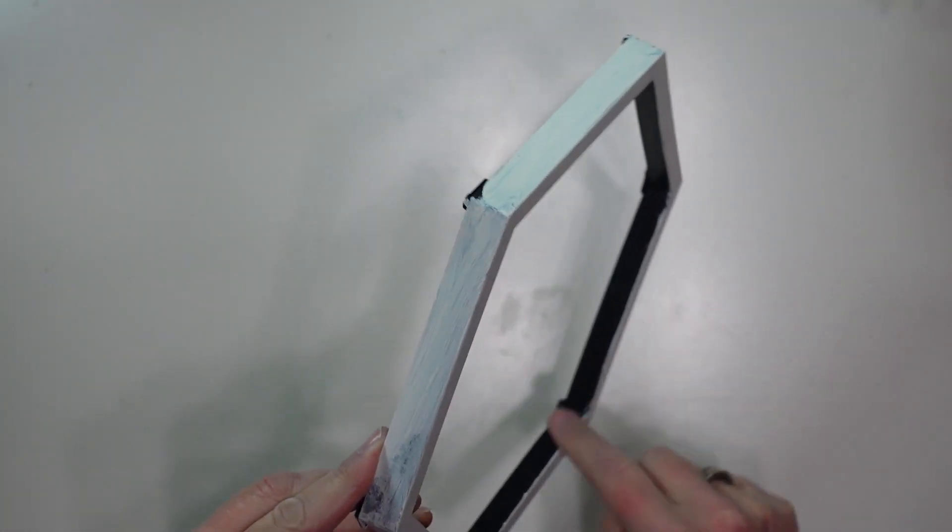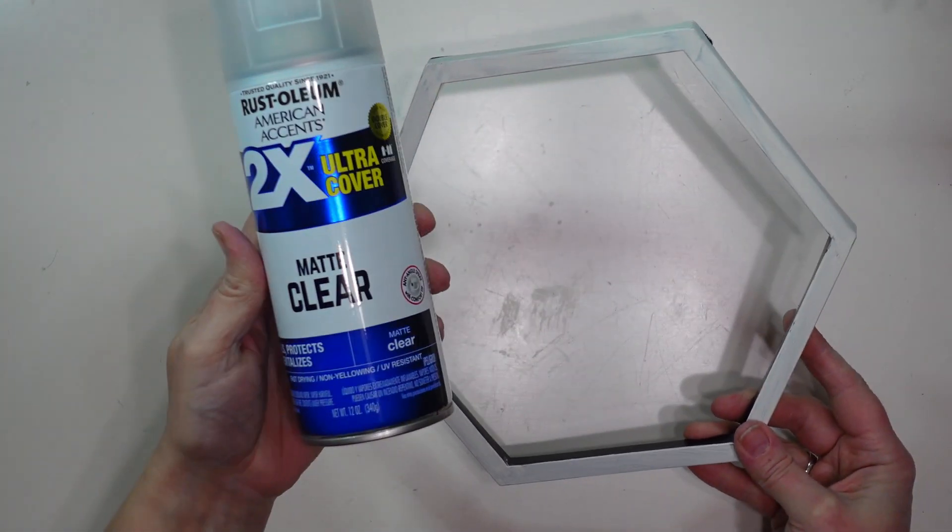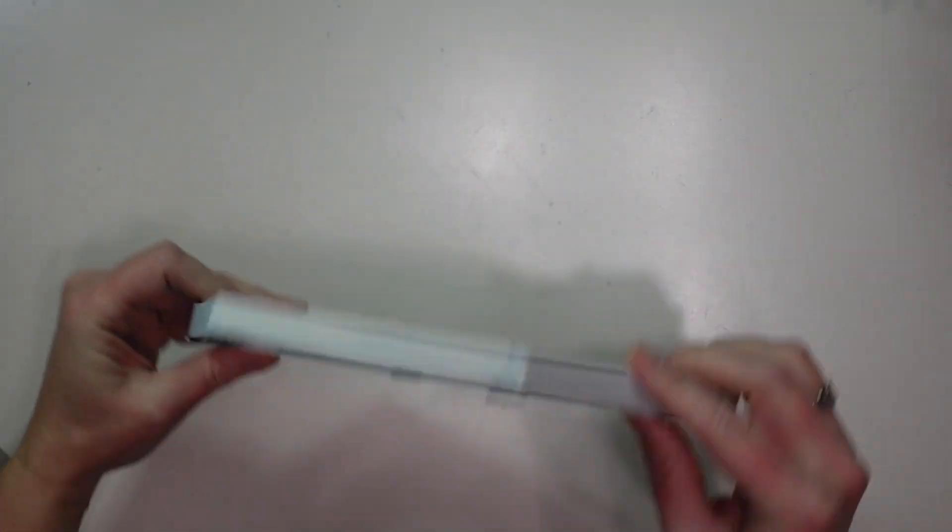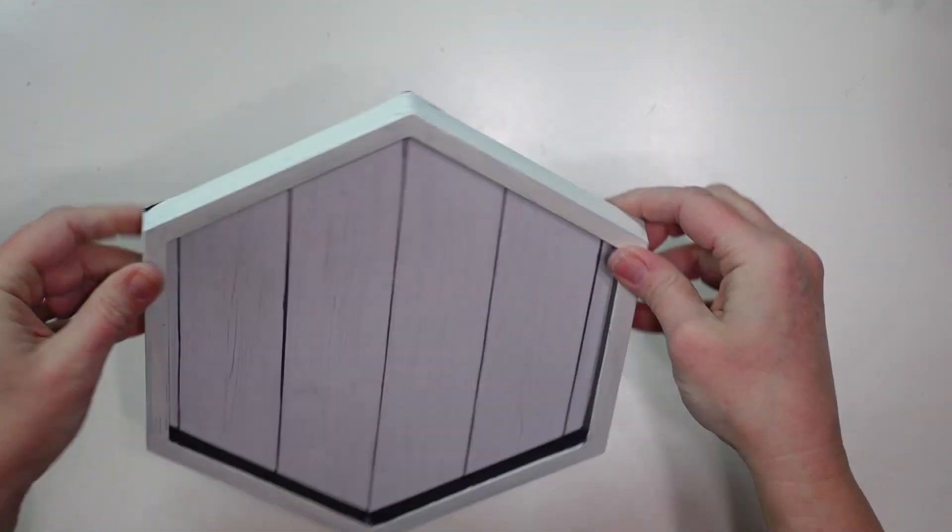I also left the inside of the frame black because I wanted that contrast and then I sprayed it with a clear matte spray. And then I put my mirror back into the frame so that the shiplap side will be facing up.